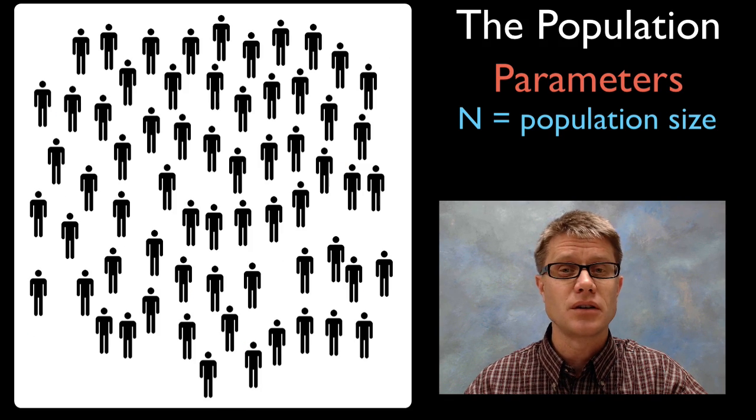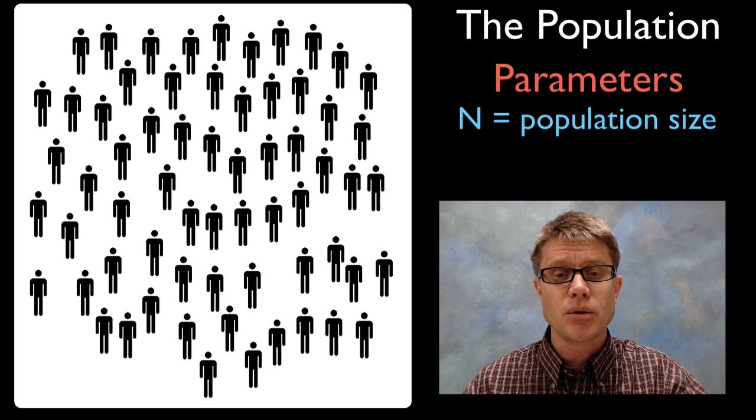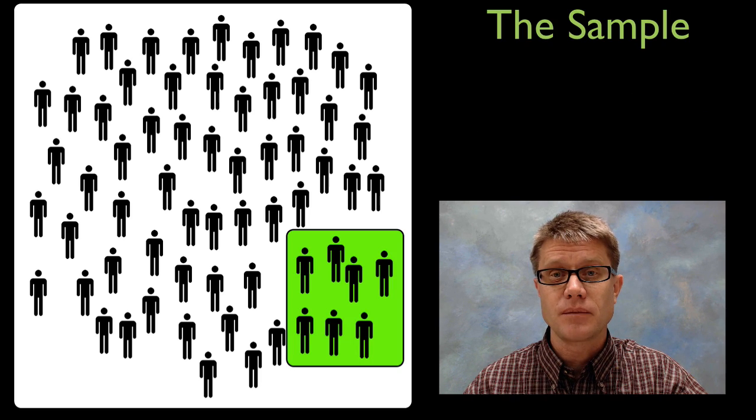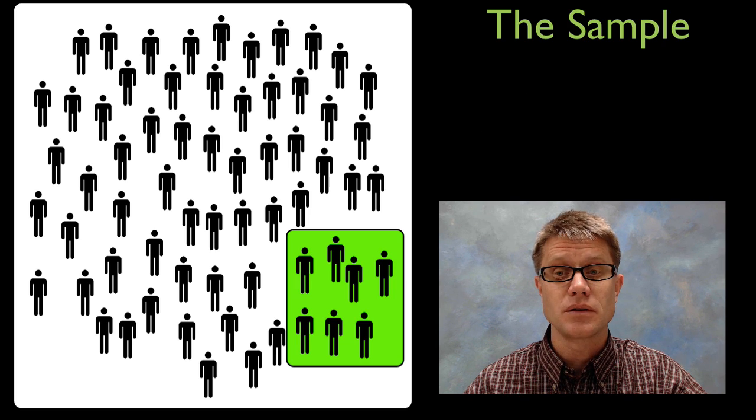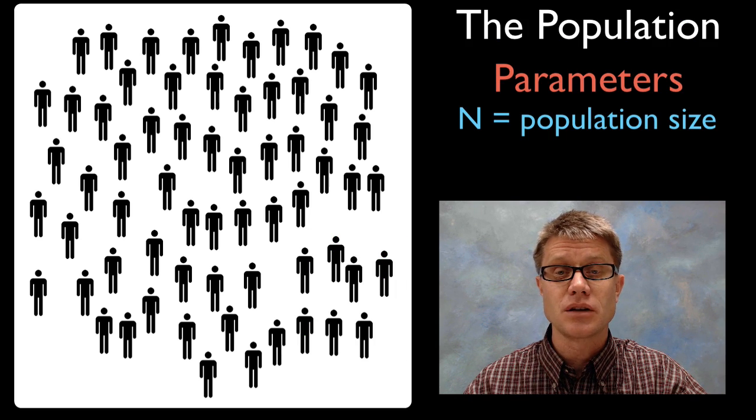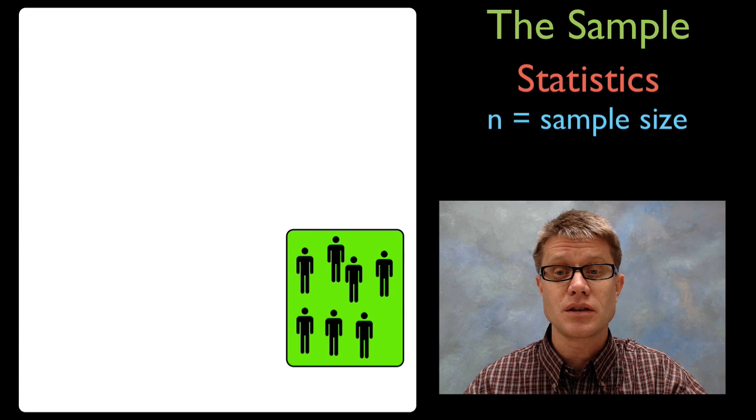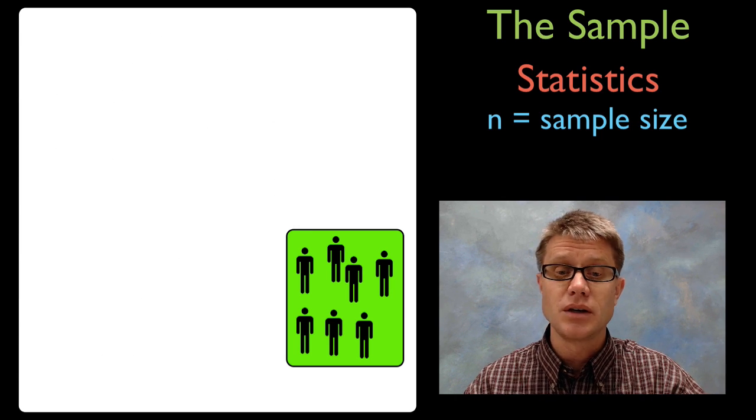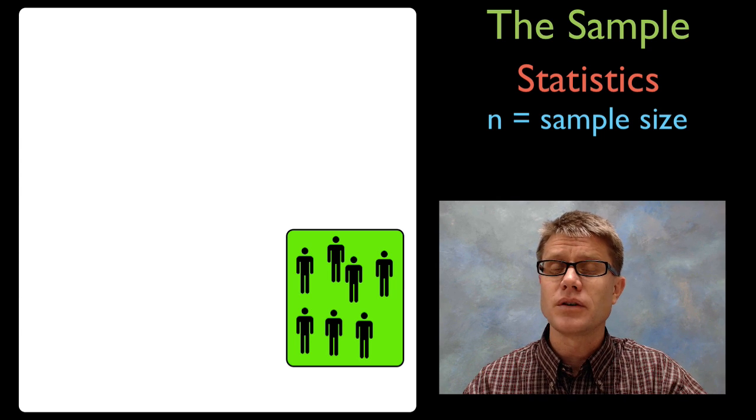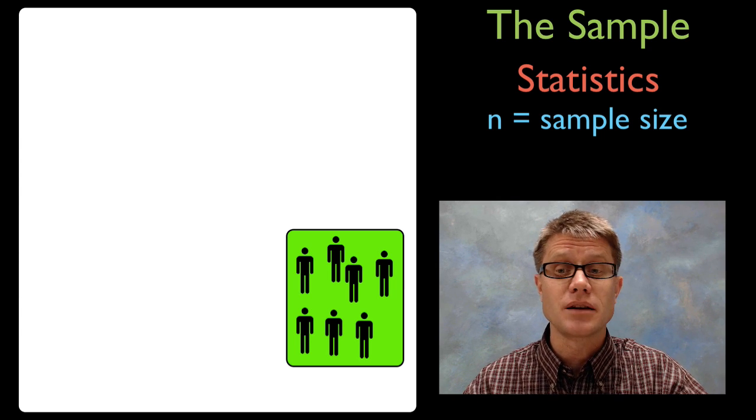If we go back to an example of a population, in science what we can do is we can take a sample of that. If this is the population then this is a sample of the population. We move from population where we study parameters and we get to the sample, we have what are called statistics. Statistics are going to be characteristics of a sample, and hopefully that's a random sample.